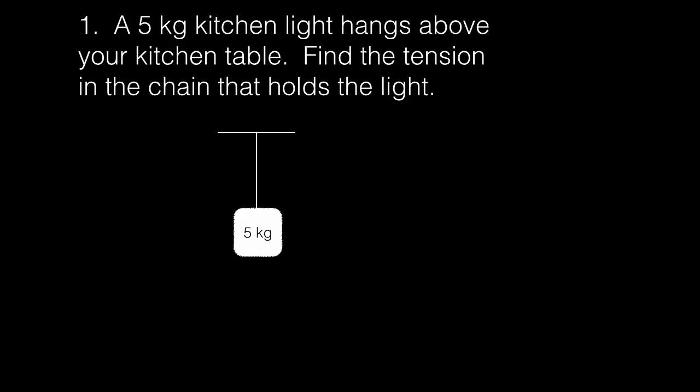Question number one says a five kilogram kitchen light hangs above your kitchen table, and it wants us to find the tension in the chain that holds the light. So we go to our diagram here. The first thing that I always do is draw all the forces that you know. Let's fill out this free body diagram.